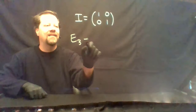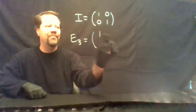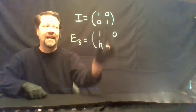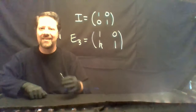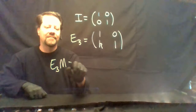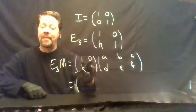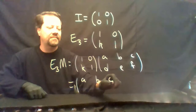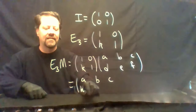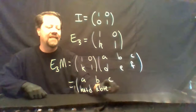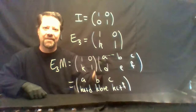We've seen we can convert the first two elementary row operations into matrix multiplications. Can we do that with the third? Suppose we multiply the first row by K and add to the second row. That doesn't change the first row, but K times 1 plus 0 is K, then 1. When we multiply this matrix times M, we pick out the first row of M, then get K·a+d, K·b+e, K·c+f — we take K times the first row and add to the second row.